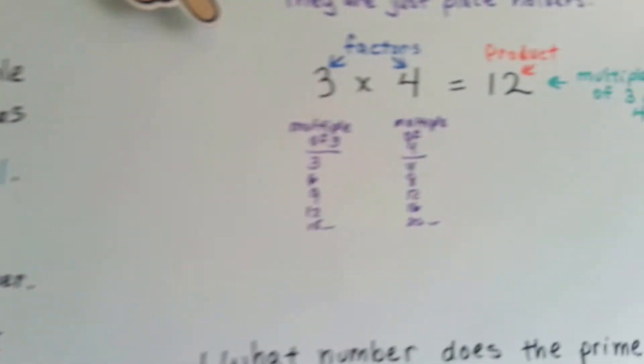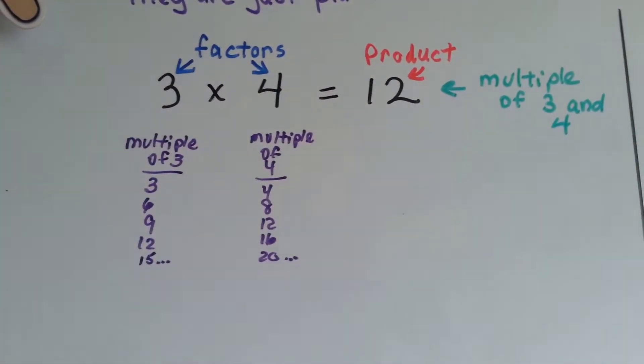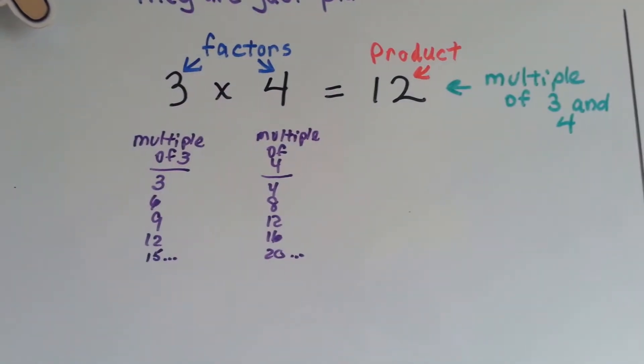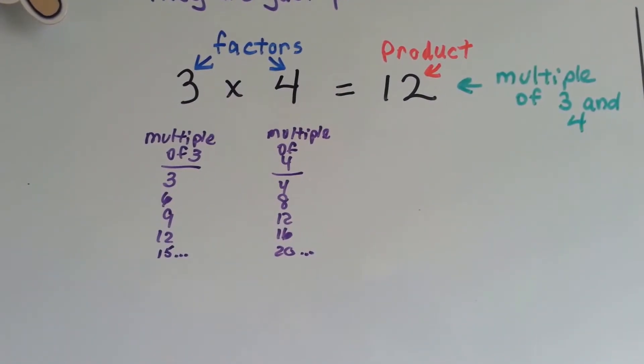So if you remember, the factors are the numbers we multiply together to get a product. The product is the answer. And the multiples of 3 are 3, 6, 9, 12, 15, they're the answers in the 3 times table.